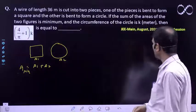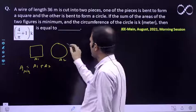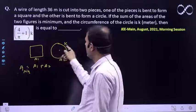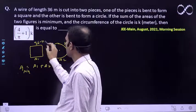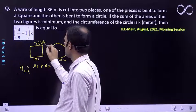The circumference of the circle is k. Then the perimeter will be 36 minus k. The length is 36 minus k. Since it's a square, one side length will be (36-k)/4.